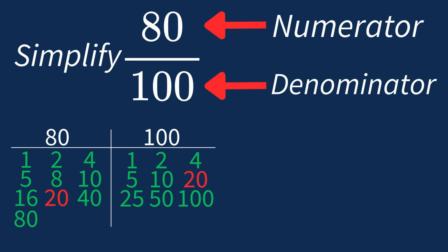This means we can divide both the numerator and denominator by 20 to simplify the fraction.